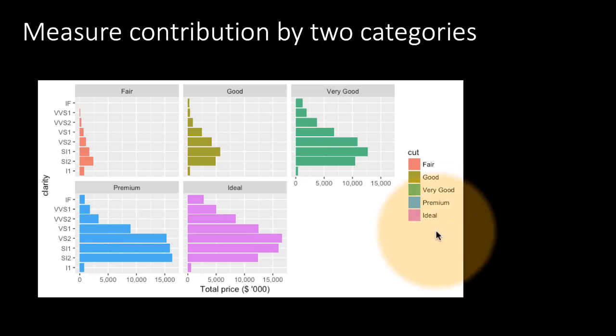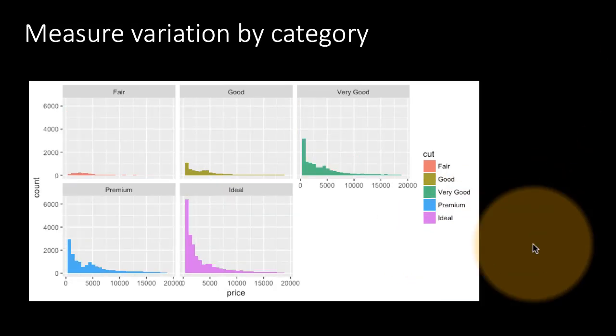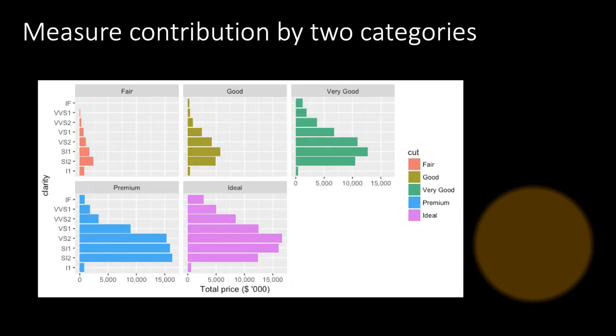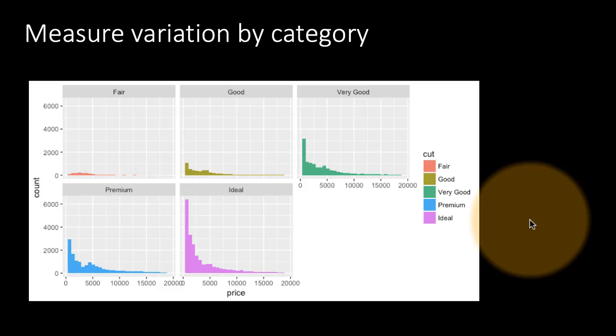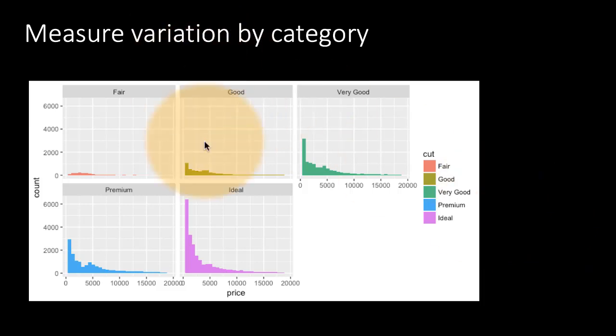But now when you want to look at measure and category together, not only can you look at contribution like we've done in the previous couple of slides, we can also look at the variation by category. In this case, we've got price on the x-axis and count on the y-axis. This is just a general histogram of price, but we have faceted by the cut of the diamond.